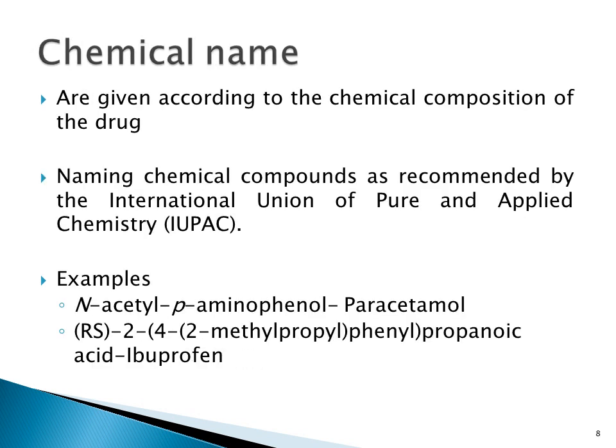Chemical names are given to a drug product according to its chemical composition, following the steps recommended by the International Union of Pure and Applied Chemistry — that is the IUPAC body, which is responsible for the naming of any chemical compound. For example, paracetamol is chemically known as N-acetyl-P-aminophenol, and ibuprofen is known as RS-2-(4-(2-methylpropyl)phenyl)propanoic acid. Those are the chemical names of paracetamol and ibuprofen respectively.